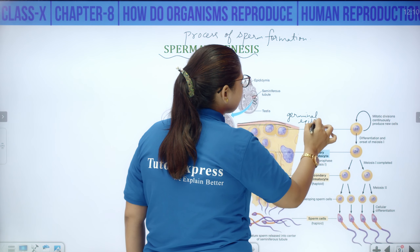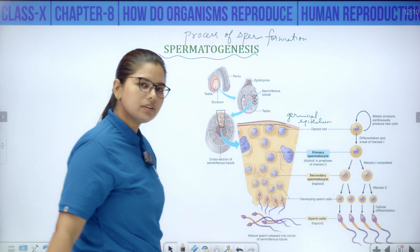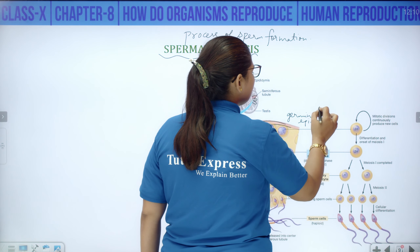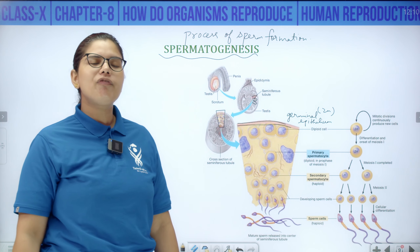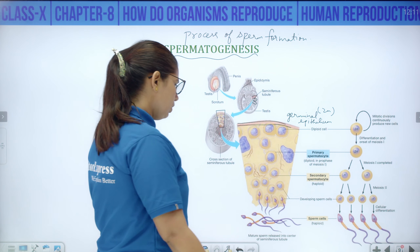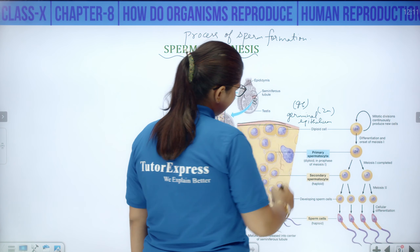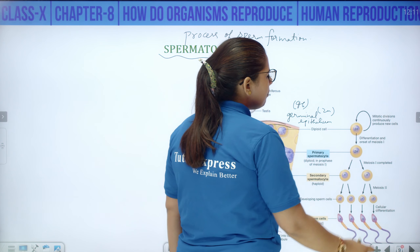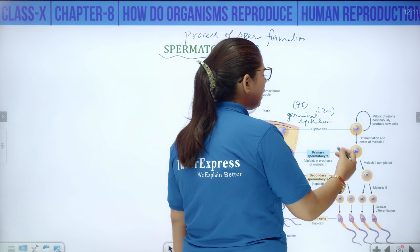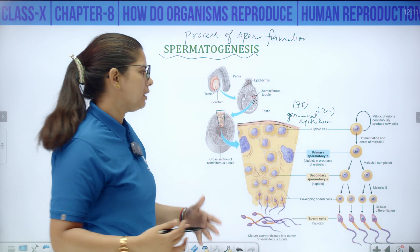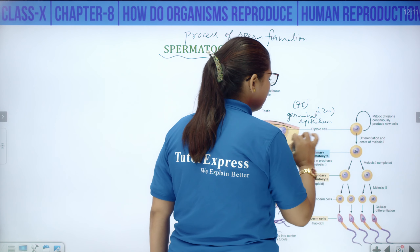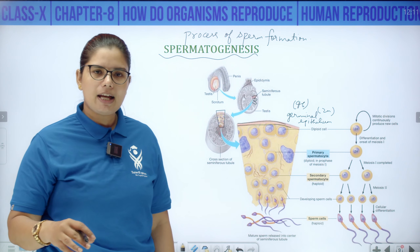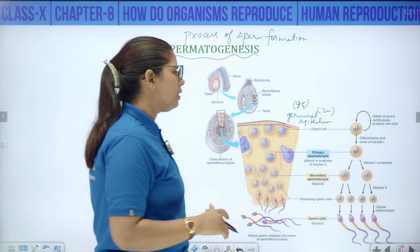The germinal epithelium cells are diploid — 2N — meaning they have a full set of chromosomes. In humans that is 46 chromosomes. Here, continuous mitosis occurs and many cells are formed. Some of these cells differentiate and prepare themselves for sperm formation.